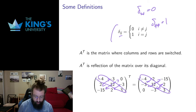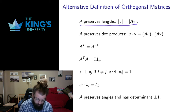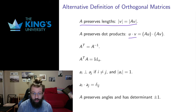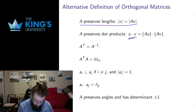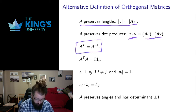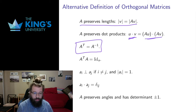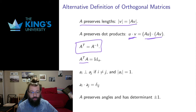So that's the Kronecker delta and the transpose. With those two definitions I can give a bunch of alternative definitions of orthogonal matrices. The one I started with is that orthogonal matrices preserve lengths. Equivalently, they preserve dot products — and that makes sense because dot products are related to lengths. Also very neatly: an orthogonal matrix's inverse is its transpose, which we can state as A times its transpose equals the identity.